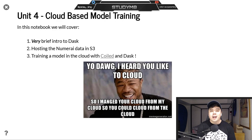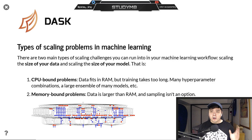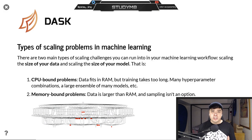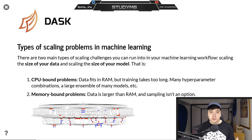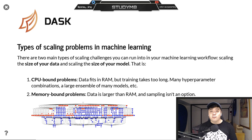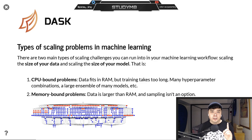Let's jump into it. The first thing we're going to look at are the two types of problems we might run into when trying to scale our machine learning project up from our local machine. The first is a CPU-bound problem — there's just such a large volume of work to be done that it overwhelms our single machine. For example, if we're trying to do a hyperparameter search with five or ten different model combinations to train and validate, that's a lot of work and can take a really long time on one local machine.